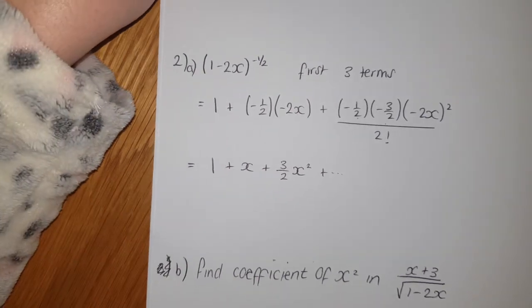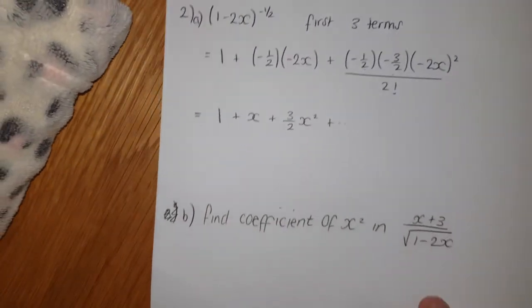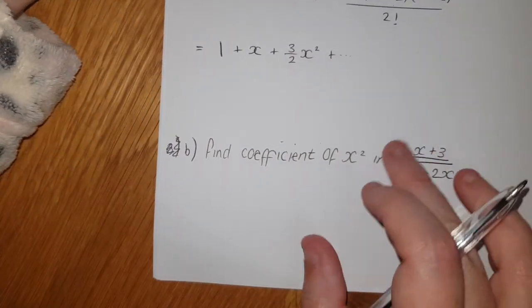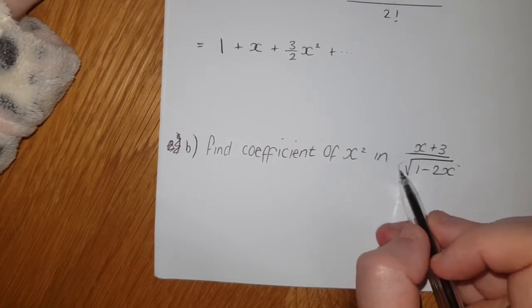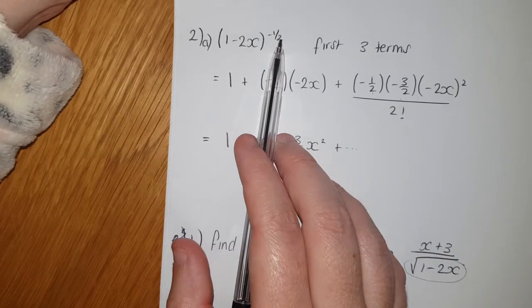Yep, okay. And then the last part of this is part b, says find the coefficient of x² in this expression. Now we've already dealt with this at the bottom here in this last question (1-2x)^(-1/2).